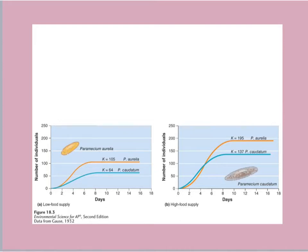A more familiar example might be herons in the United Kingdom. The UK can have particularly cold winters that freeze the surfaces of ponds, making amphibians and fish inaccessible to birds that depend on waiting to catch their food. With their food supply no longer available, herons face an increased risk of starvation. Regardless of whether the heron population is low or high, freezing the pond affects them all — so weather would be considered what type of factor, density-dependent or density-independent?